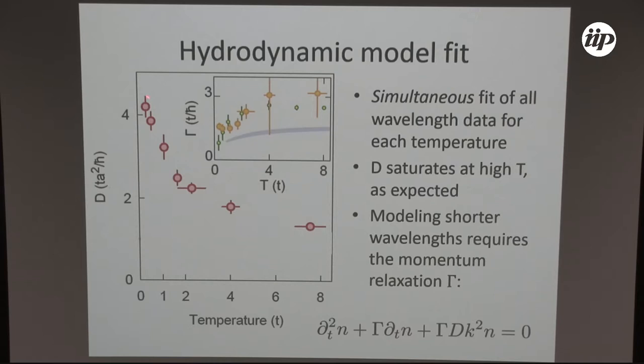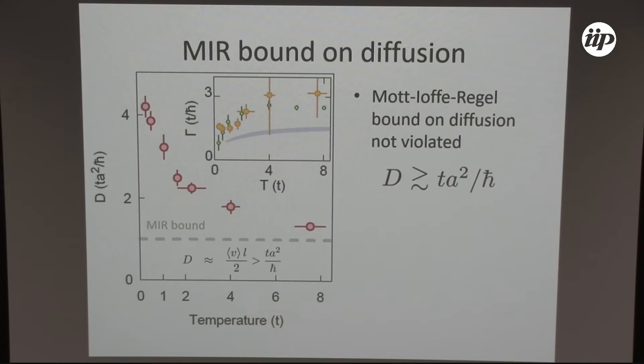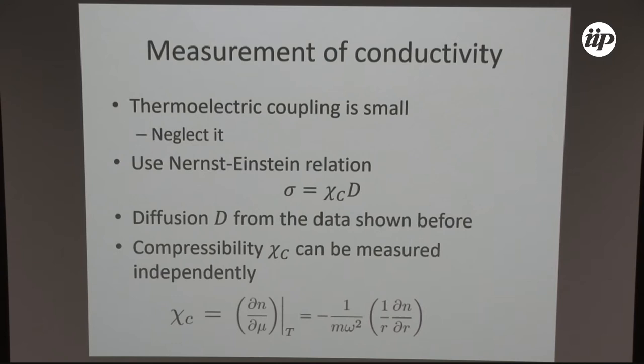Here you see the diffusion versus temperature. You see the diffusion constant decreases. If you look at the model of the Mott-Ioffe-Regel bound, you see that if you plug in all the numbers, you get a lower bound on the diffusion. We see here that the diffusion nicely satisfies this Mott-Ioffe-Regel bound. There seems to be no problem. In this definition, it doesn't look like a bad metal.